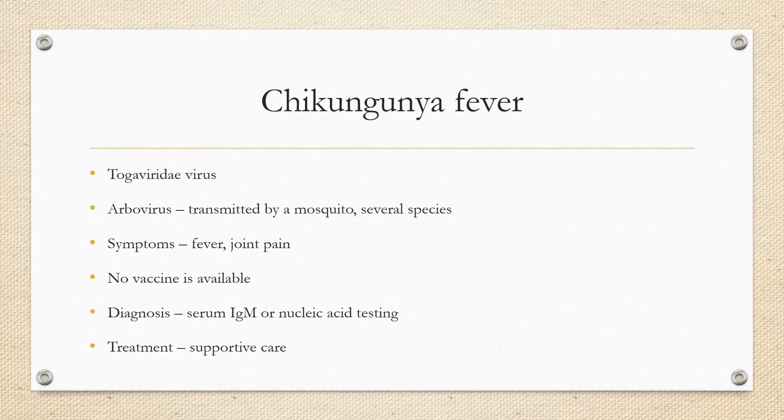Chikungunya fever is seen in the United States, South America, India, and Southern Africa. There were 90 cases in the US in 2018-2019, all originating outside the country. It is a togaviridae arbovirus transmitted by mosquitoes. Symptoms include headache, rash, fever, and joint pain. There is no vaccine available; diagnosis is by serum antibodies or nucleic acid/molecular testing, and treatment is supportive care only.